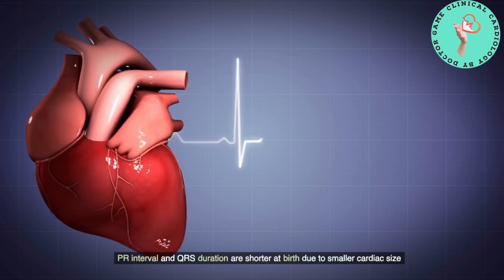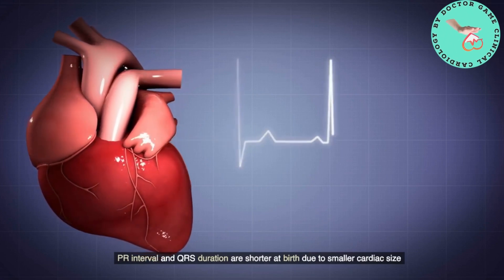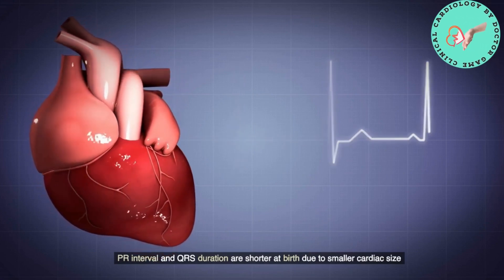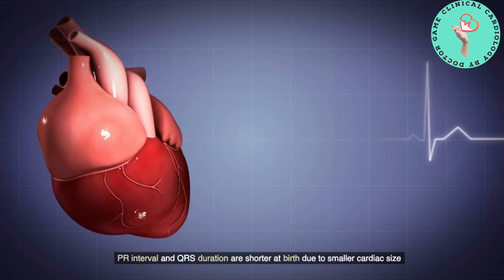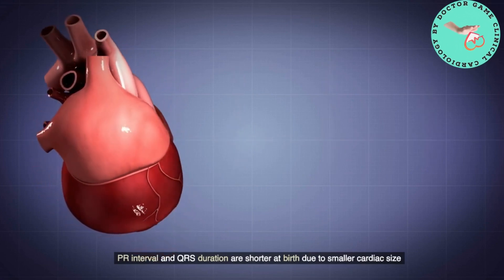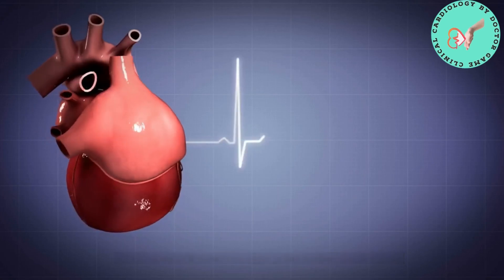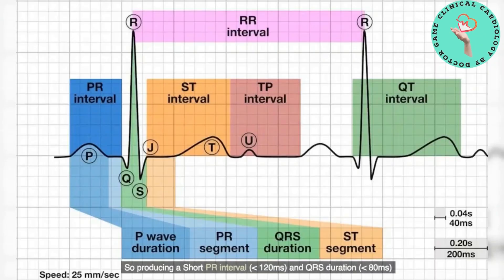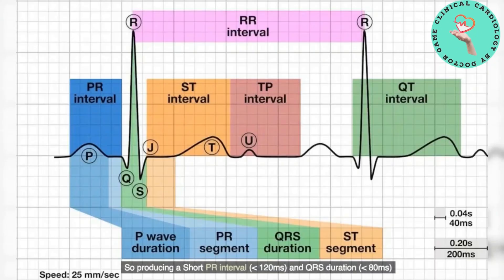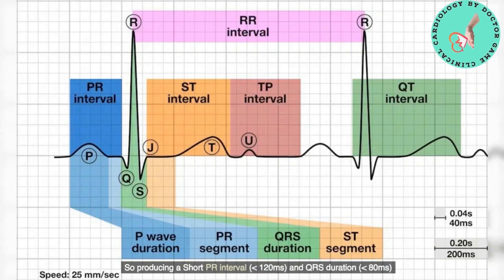Four: ECG intervals. PR interval and QRS duration are shorter at birth due to smaller cardiac size, producing a short PR interval of less than 120 milliseconds and QRS duration of less than 80 milliseconds.